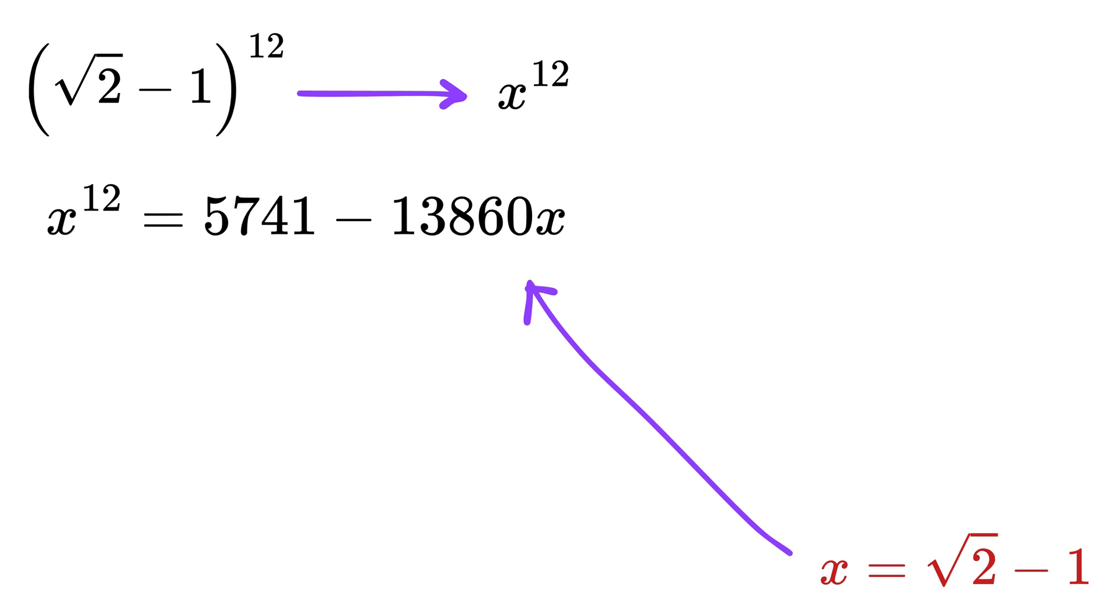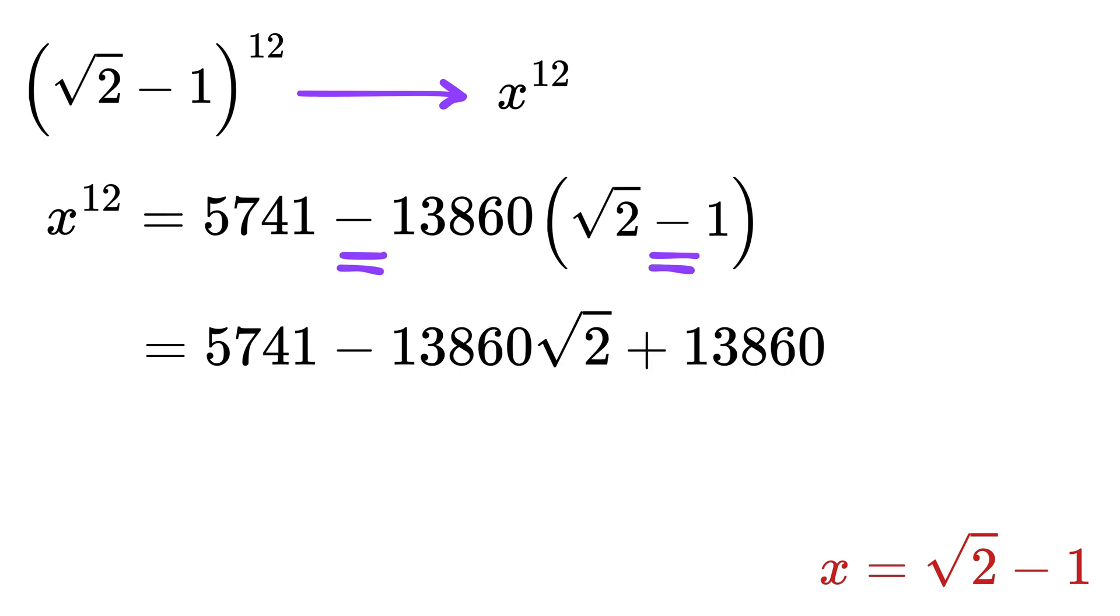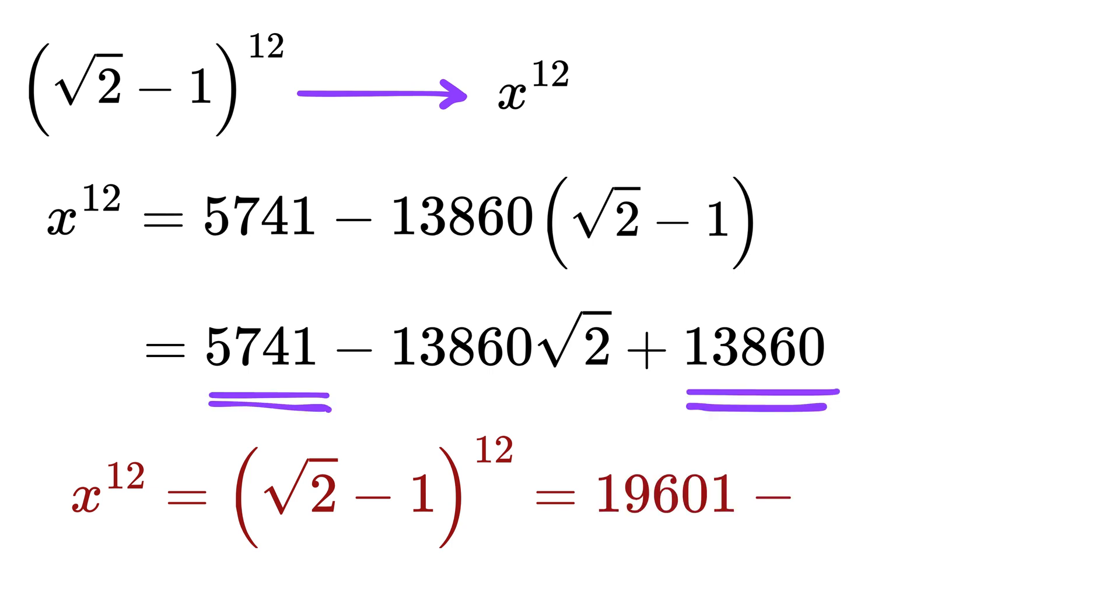Lastly, just substitute the value of x as √2 - 1 to get 5741 - 13860(√2 - 1) = 5741 - 13860√2 + 13860. This gives us x^12 = 19601 - 13860√2, and that's it.